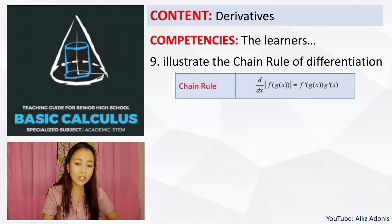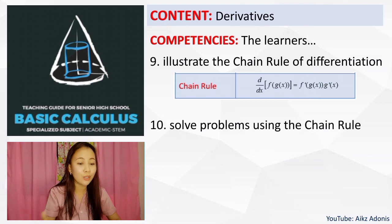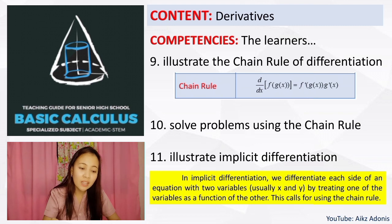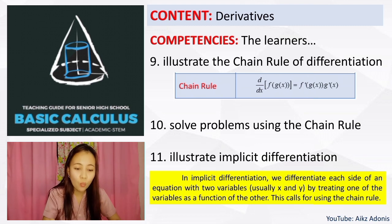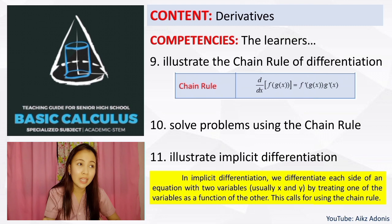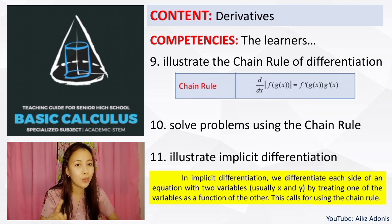Ninth: the learners must illustrate the chain rule of differentiation, and you are going to solve problems using this chain rule. For the eleventh competency: illustrate implicit differentiation. In implicit differentiation, we differentiate each side of an equation with two variables, usually x and y, treating one variable as a function of the other — which calls for using the chain rule. For some students this is a little difficult, but if you study and read more about it, I know you can get it.